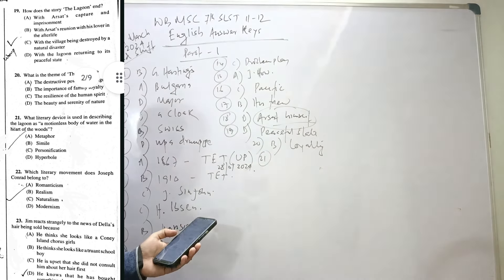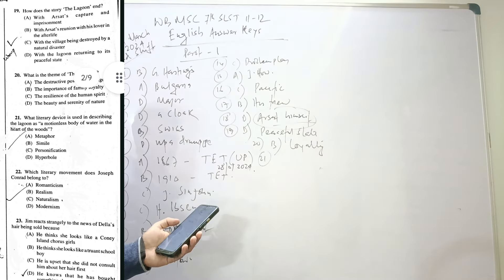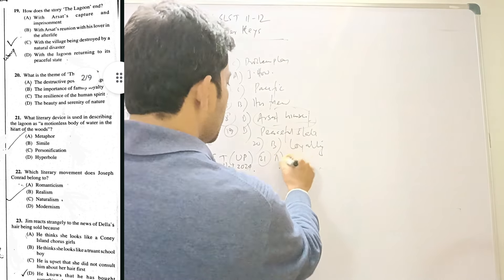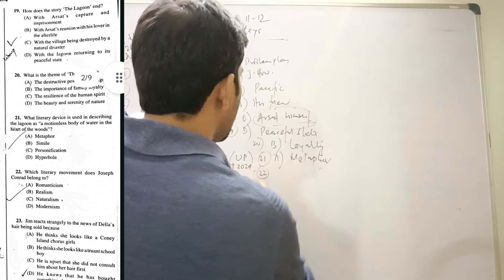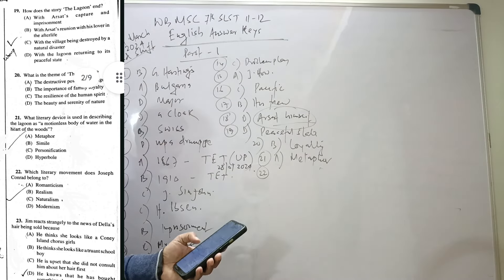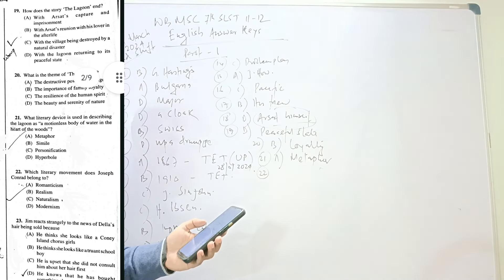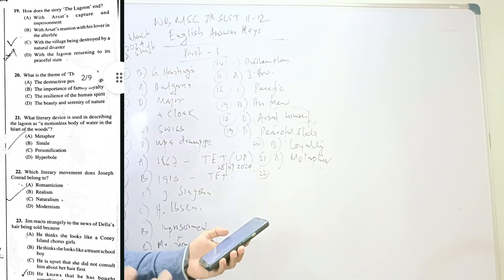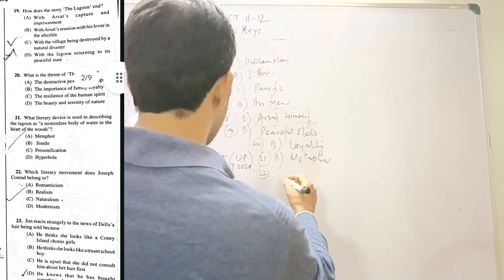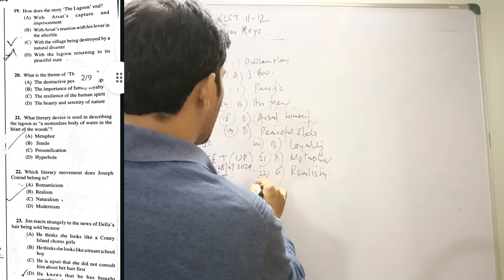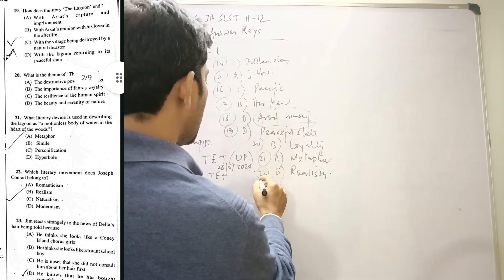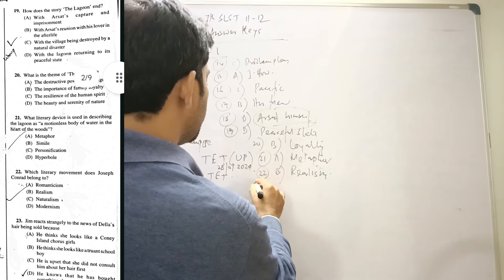Twenty-one: What literary device is used in describing the lagoon as 'a motionless body of water in the heart of the woods'? It is metaphor. When something is compared with something else not using 'like' or 'as,' it is called metaphor. Twenty-two: Which literary movement does Joseph Conrad belong to? Realism would be the correct answer. Realistic way of portraying life was the habit of Joseph Conrad while writing.